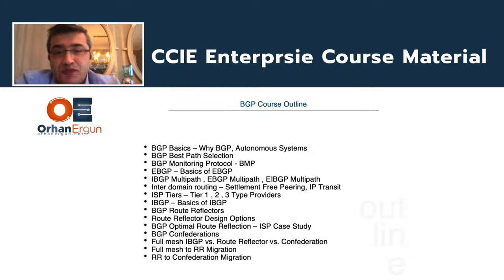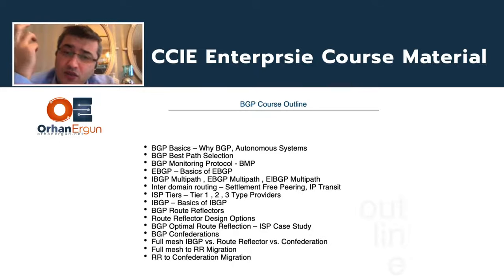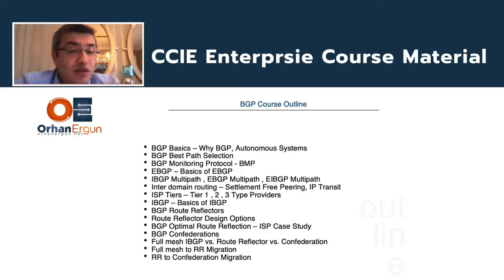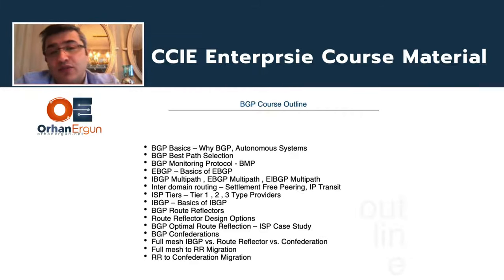BGP best-path selection: BGP next-hop must be reachable, longest match always wins, then local preference, AS-path, origin, MED. After that, we check if the prefix is coming from EBGP versus IBGP — EBGP is preferred over IBGP. If it's IBGP, we rely on hot-potato routing. I'll also explain BGP Monitoring Protocol (BMP): what it can do and what it cannot do. Then we'll start with EBGP — external BGP, global routing, the default-free zone. In service provider networks, the default-free zone is a commonly used concept.